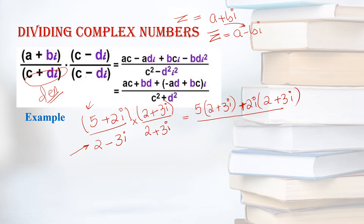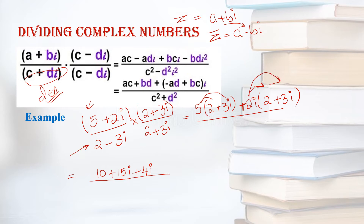Forget about the denominator for now. Multiply on the top: 5 times 2 gives you 10, plus 5 times 3i gives you 15i. Then plus 2i times 2 gives you plus 4i. Then 2i times 3i gives you 6i².